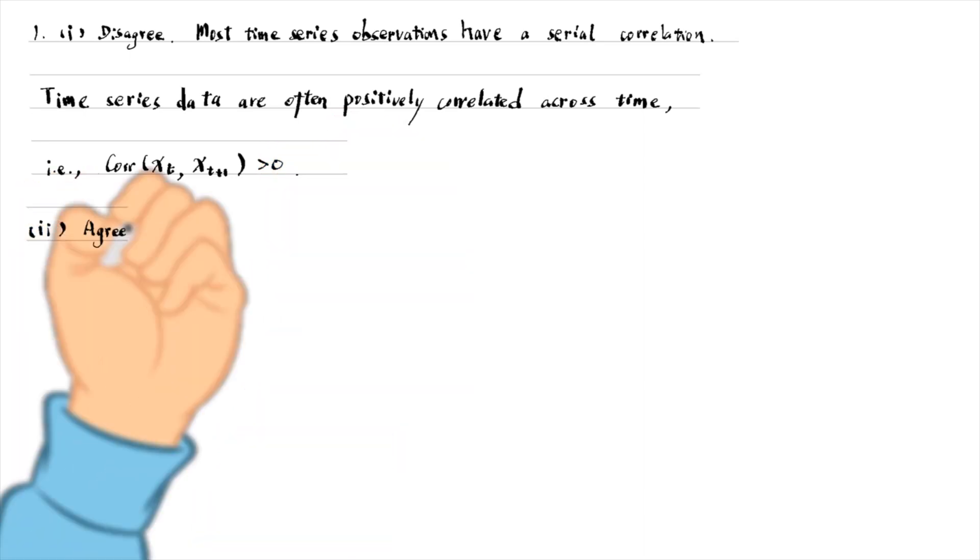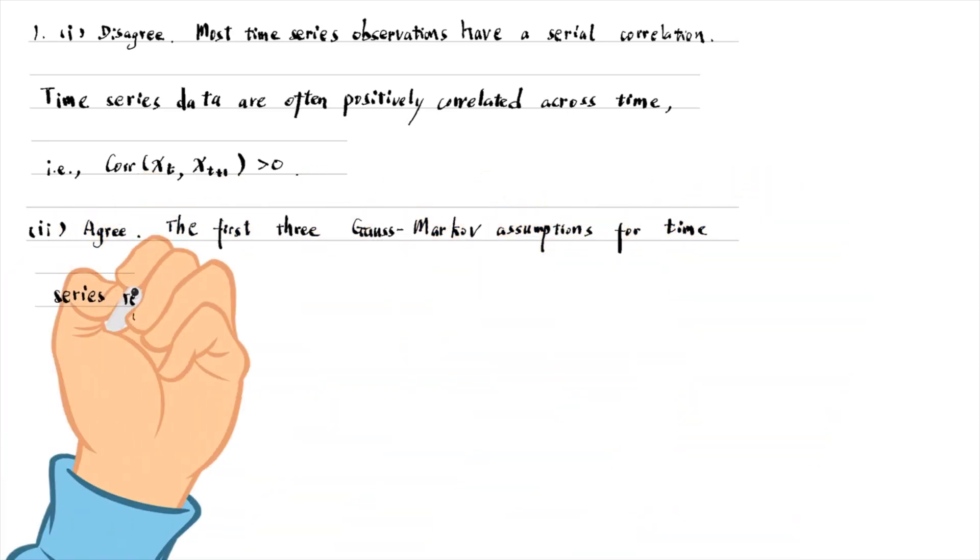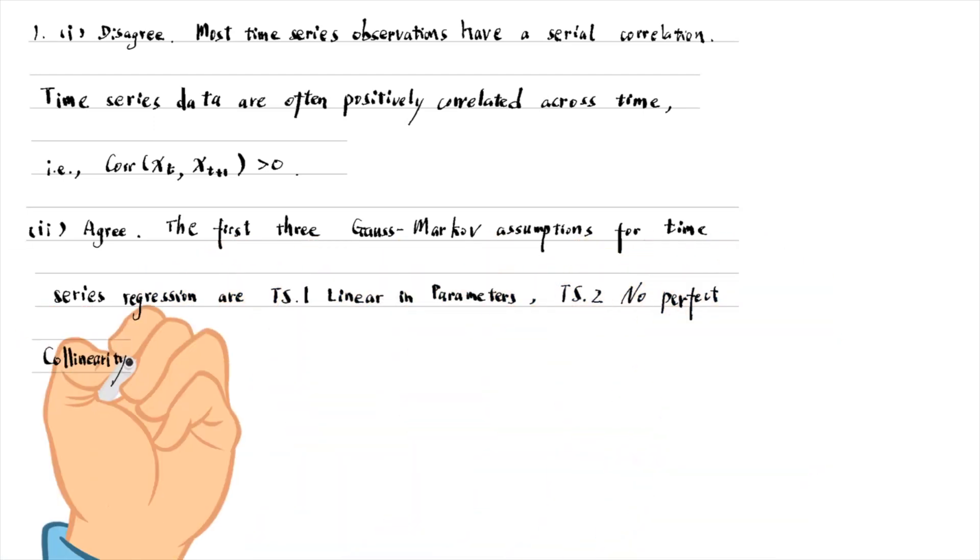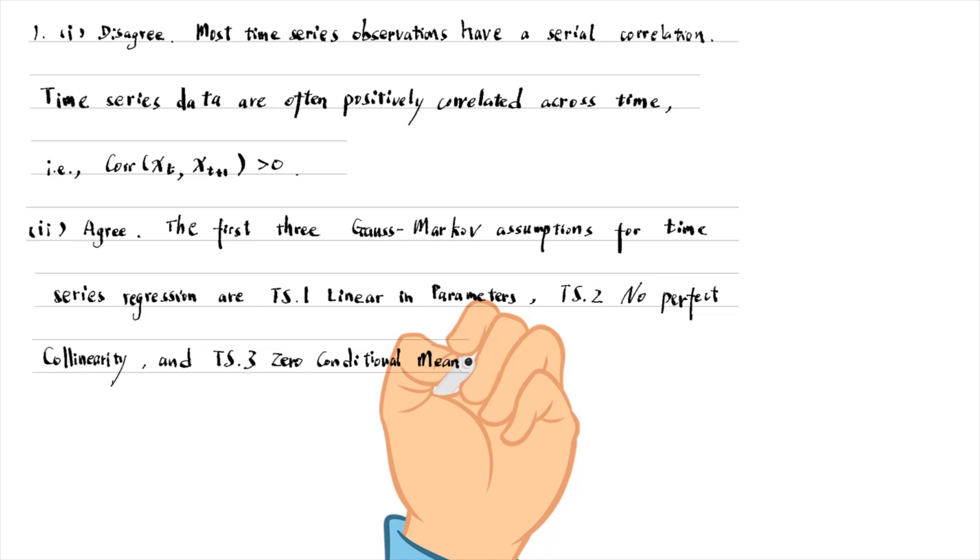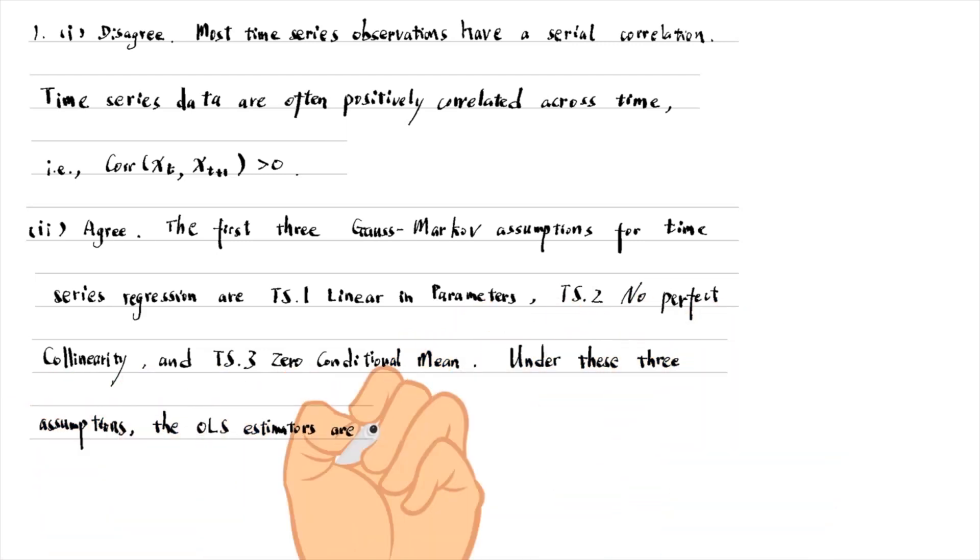I agree with the statement in part 2. The first three Gauss-Markov assumptions for time series regression are linear in parameters, no perfect collinearity among explanatory variables, and zero conditional mean. Under these three assumptions, the OLS estimators are unbiased.